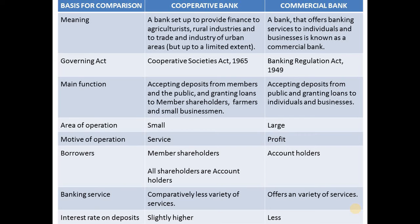The main function of cooperative banks is accepting deposits from the members and the public and granting loans to member shareholders, farmers, and small businesses. Whereas the main function of commercial banks is accepting deposits from the public and granting loans to individuals and businesses.